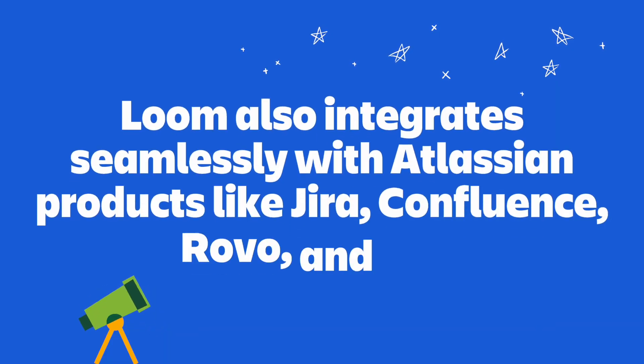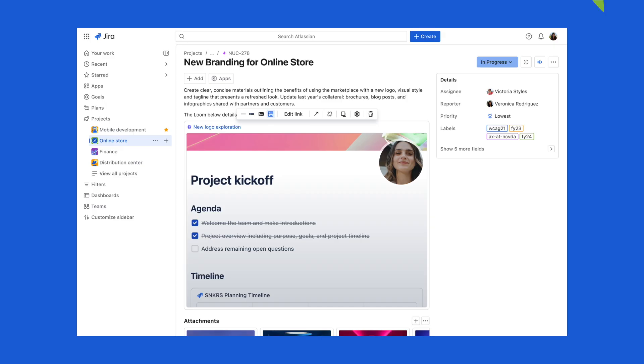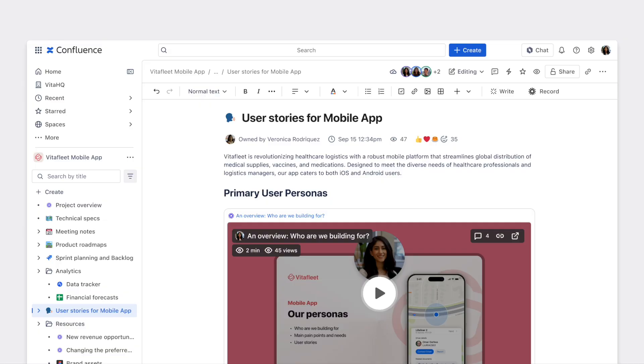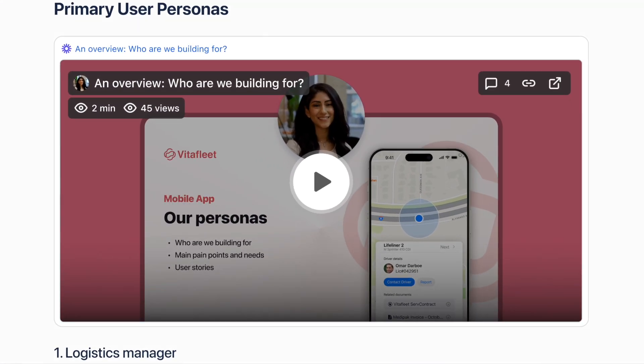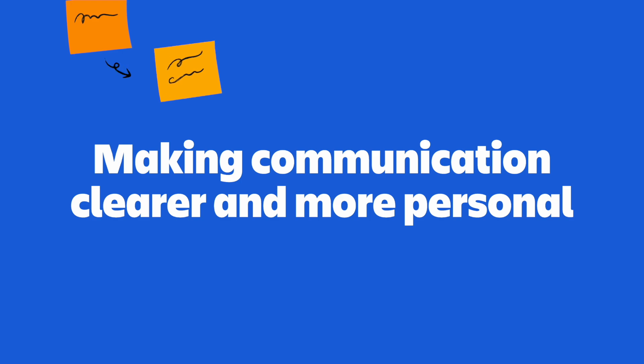Loom also integrates seamlessly with Atlassian products like Jira, Confluence, Rovo, and Jira Service Management. So if you need to provide visual feedback on a project, just embed a Loom video directly into a Jira task. Want to make your Confluence documentation more interesting? Record and add a Loom without ever leaving your page. Loom turns video into a key component of teamwork, making communication clearer and more personal.